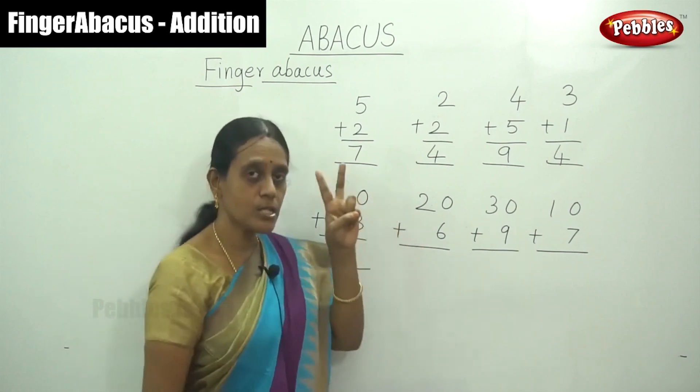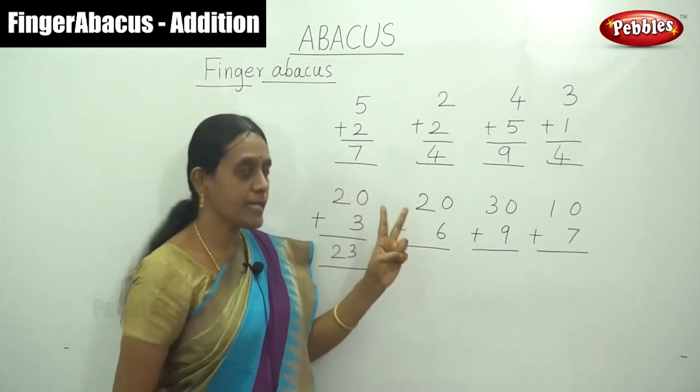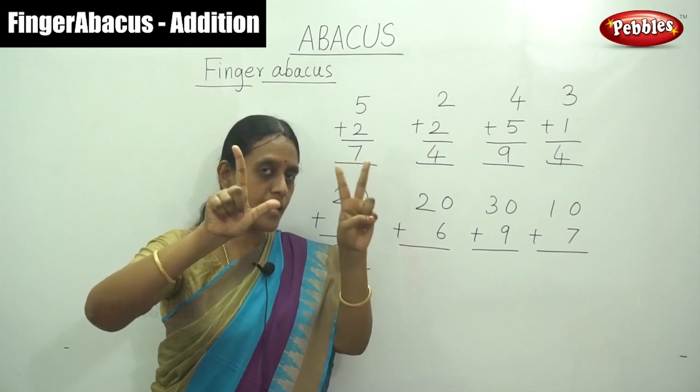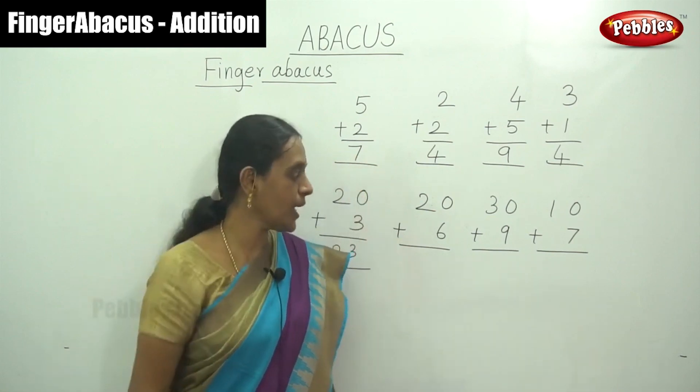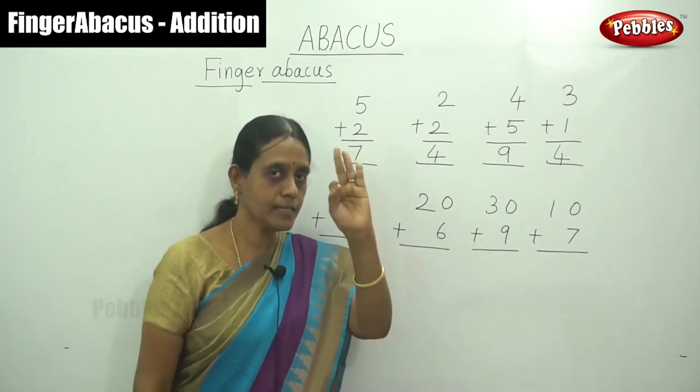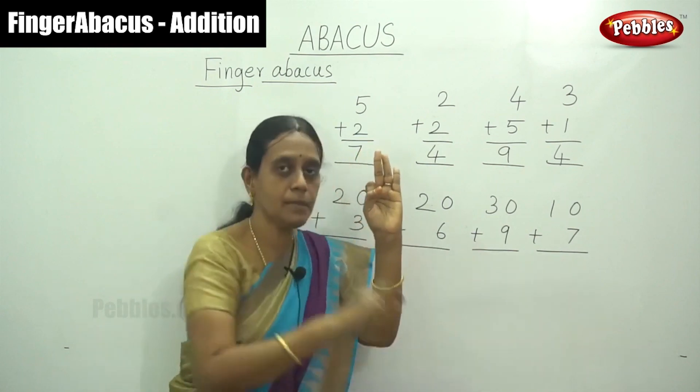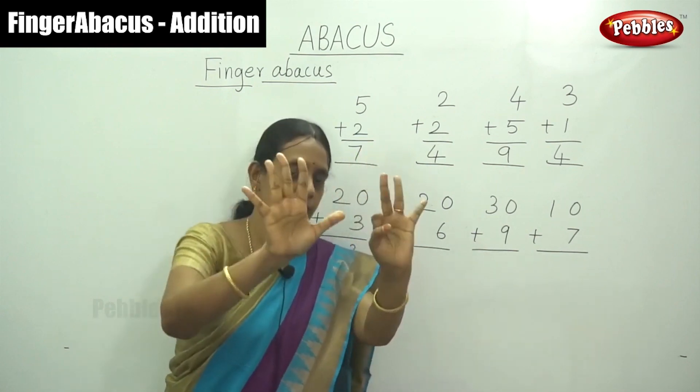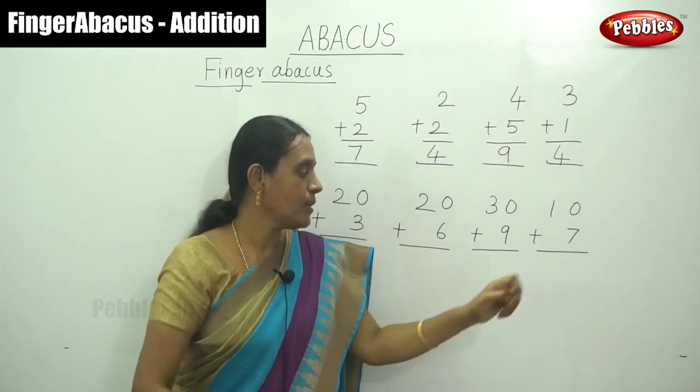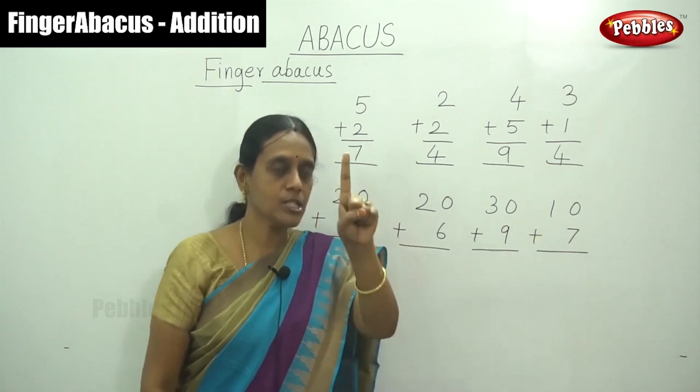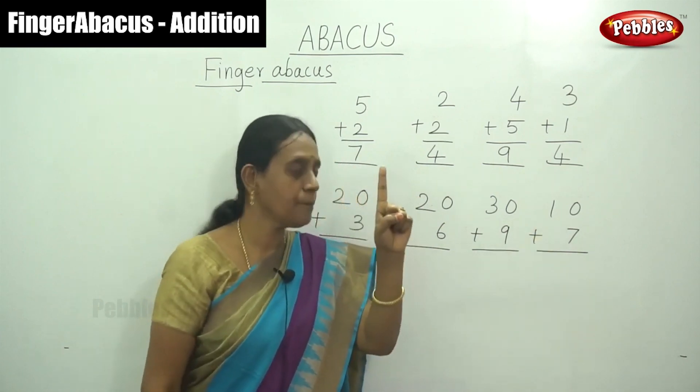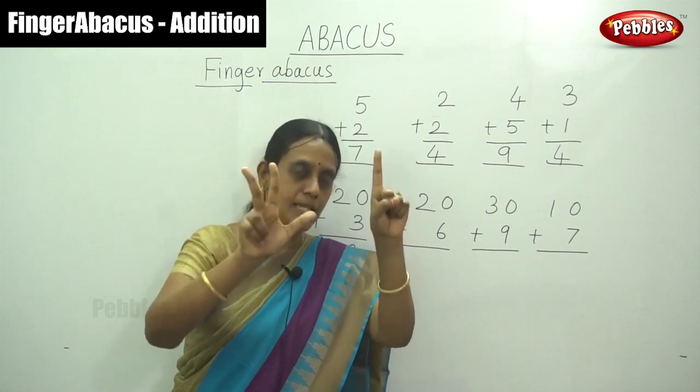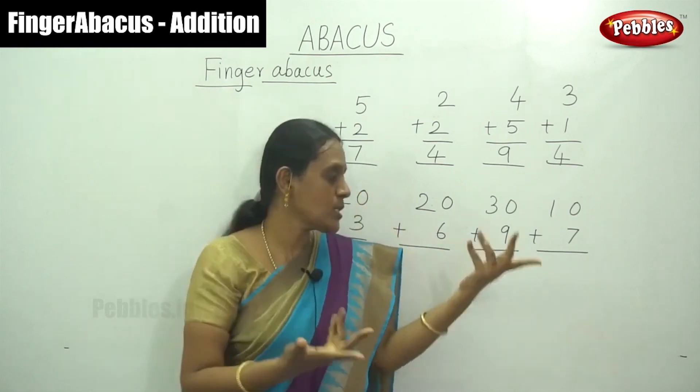By simply saying that is 20 and 6. What is the answer? 26. And next one is 30. Next number that is 9. So answer is 39. And 10, that is show you one finger here, and the 7. Answer is 17. So simple way.